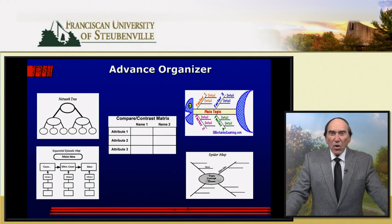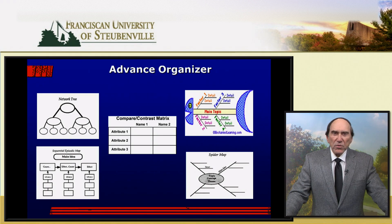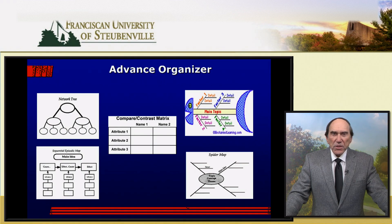The advance organizer or graphic organizer is a way to organize thinking using an outline or visual means to process information. This type of information processing may be employed in conjunction with other models of teaching. There are many different types of graphic organizers: the network tree, the compare and contrast matrix, the fishbone, sequential, episodic map, and the spider map represent a few.